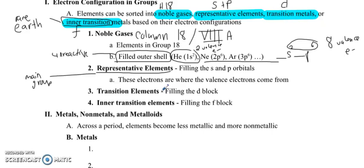These electrons are where the valence electrons come from. So if you add them up in the s and p orbitals, you will figure out exactly how many valence electrons there are. Transition elements, those are filling the d block. That's in the center part of your periodic table. And then the inner transition elements filling the f block.